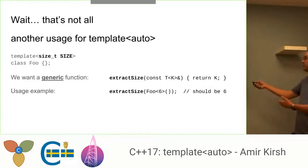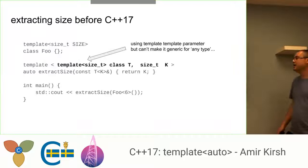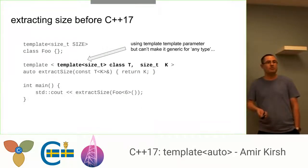So something like return K, which is the size from T<K>, and for Foo of six, we would like to get back six. Now, this can be done without template auto back in C++14 or C++11 easily. But we need to say that the type T is templated on size_t. We need to know the actual type of the non-type parameter. We need to know that it is a size_t.